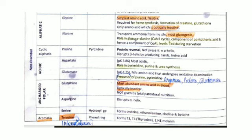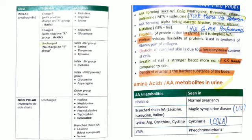Glutamine is the most abundant amino acid and is optically inactive in nature. Aromatic tyrosine has a phenol ring structure and helps in formation of T3, T4, epinephrine, norepinephrine, and melanin. These are non-essential amino acids with specific structural roles in blood and protein synthesis.